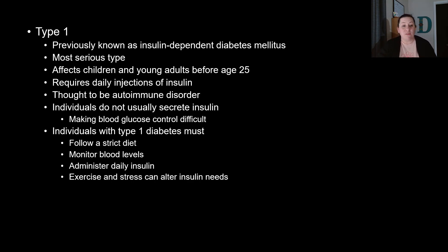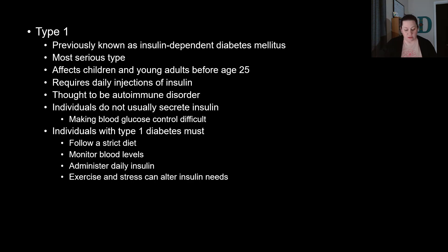Individuals with type one diabetes have to follow a strict diet to keep their sugars under control. They also have to monitor their blood glucose levels on a regular basis using glucose monitors. They have to administer their own insulin daily. Exercise and stress can actually alter their insulin needs, so they have to be careful. If they're going to exercise, they need to monitor those sugars very closely. Stress can alter them as well, so exercise routines and stress management have to be part of their treatment plan.